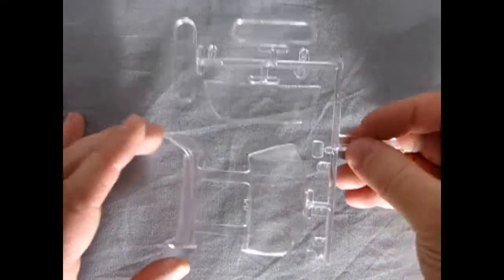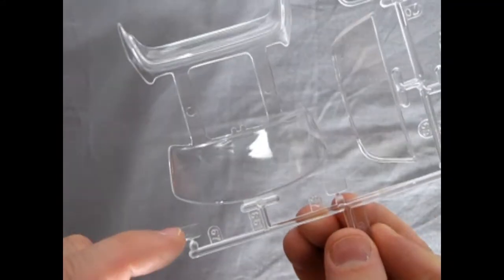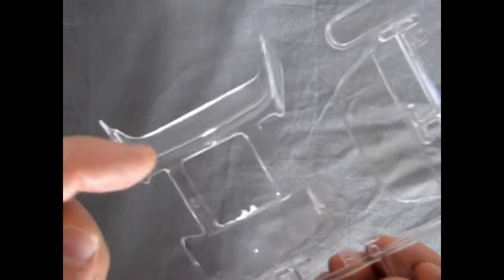Here we have the clear glass components. And as you can see, our headlights are actually molded down here, not in the center up here in the windows.